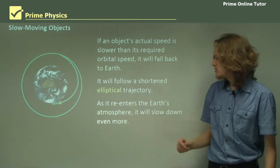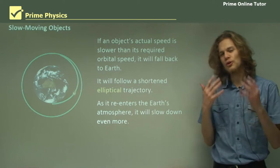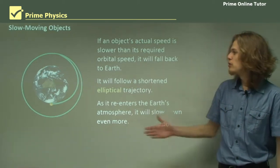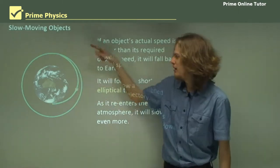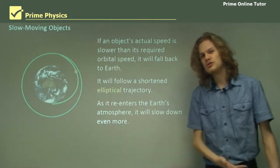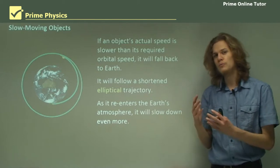Now as it reenters the Earth's atmosphere it will slow down and this means that because we have an atmosphere it won't follow an elliptical trajectory. It will get close to Earth and then just sort of start moving inward even more.